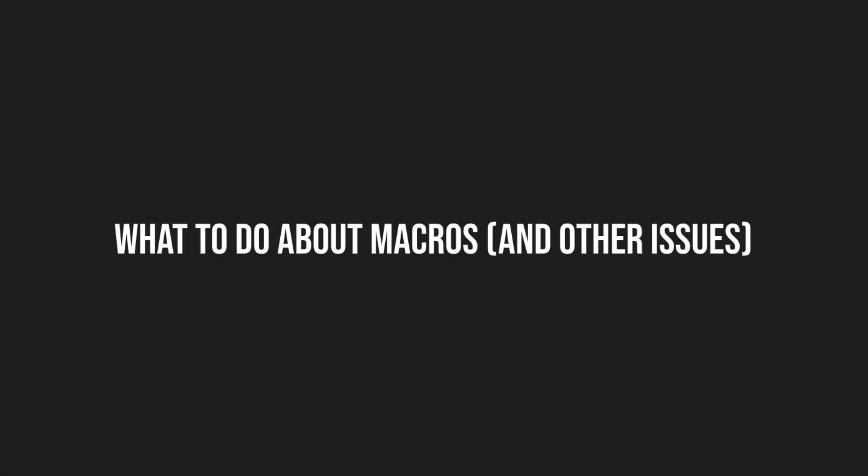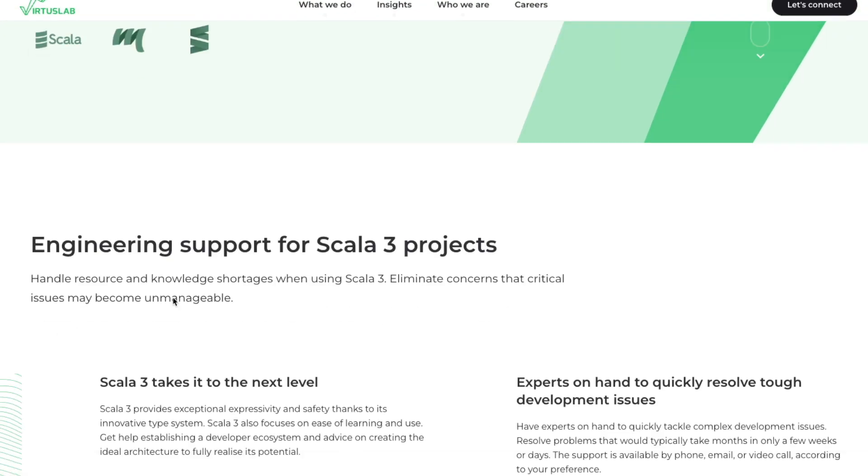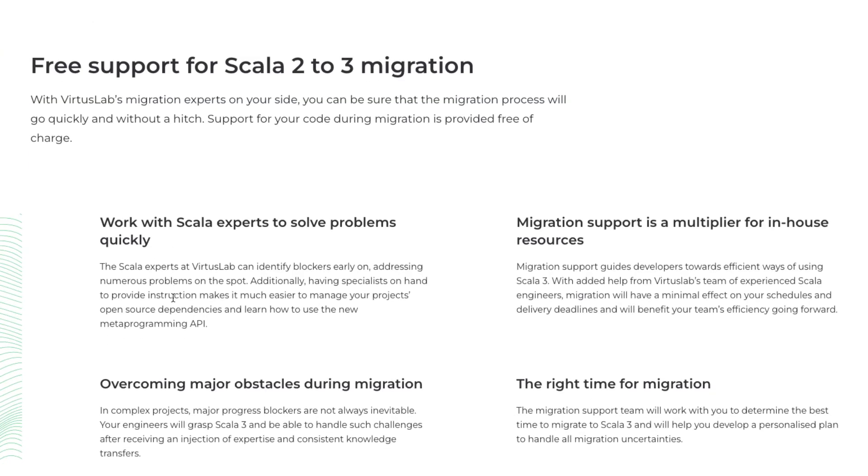What to do about macros and other issues? First, ask whether macros live in a separate unmaintainable service — can you leave it alone for now and rewrite them later? Or can you extract the usage of macros into an independent service or library? And if the macros rewrite is unavoidable and unattainable, consider asking for help. For instance, VirtusLab offers free support with migration, which sounds like a great opportunity.